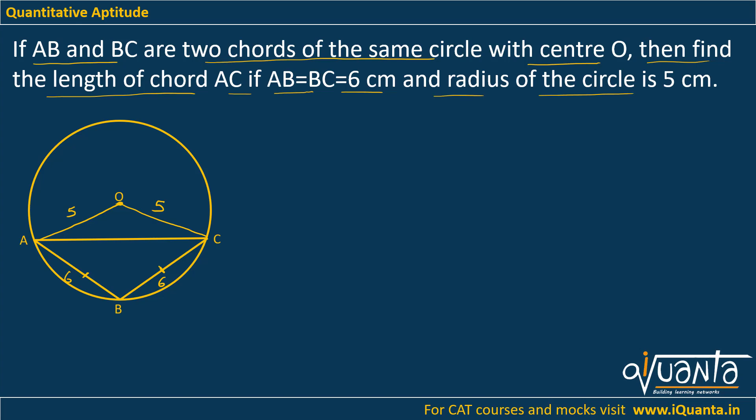Now we can see that this triangle ABC, it is isosceles because AB is equal to BC. So this center will be directly above this point B. So I can say that these two are perpendicular: AC and OB.